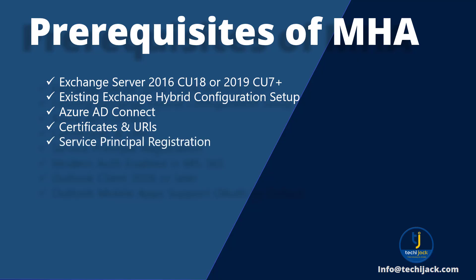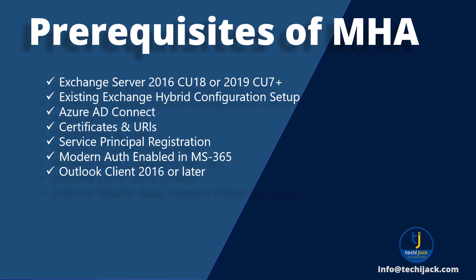You also need a service principal registration — Exchange on-premises must be registered in Azure AD using PowerShell. Modern authentication should be enabled; verify that it is enabled in your Microsoft 365 tenant using the command: Get-OrganizationConfig | FL *OAuth*. For client requirements, you should have at least Outlook 2016 or later. The Outlook mobile app supports OAuth by default.